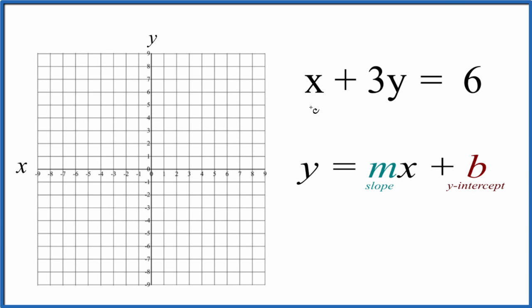Let's graph the linear equation x plus 3y equals 6, and we're going to use this slope-intercept form to do that.